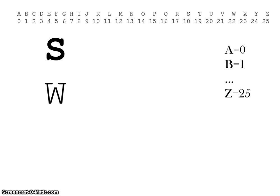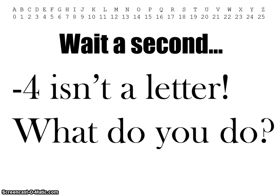Okay, so S and W are 18 and 22. The next step to decode is that you subtract these numbers, which in this case you get negative 4. Then you take that number and see what letter corresponds to it. If you look at your table, wait a second, negative 4 isn't on there, so what do you do?